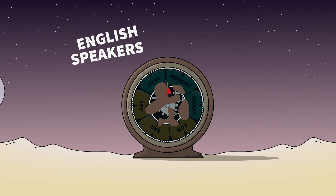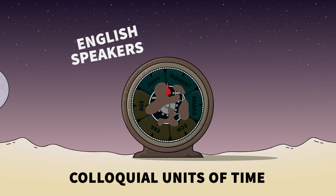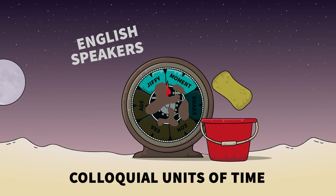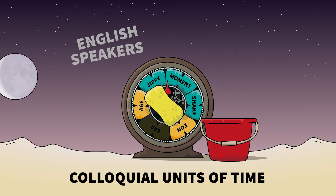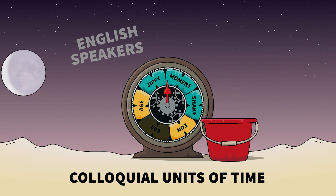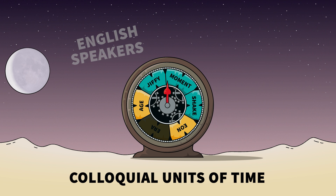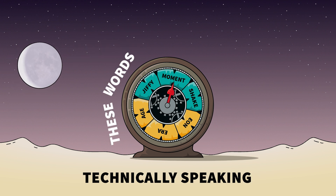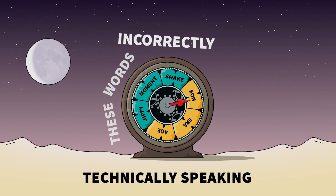English speakers use colloquial units of time. We say things like 'I'll clean the clock in a moment, a jiffy or a shake,' or 'It's been eons or ages since I last cleaned the clock. This is the end of an era.' But technically speaking, these words are being used incorrectly.